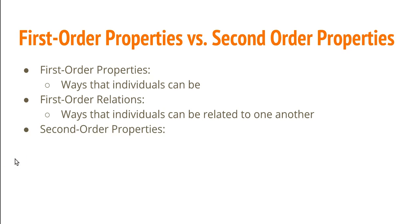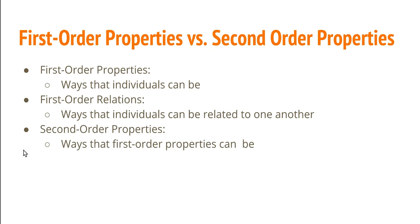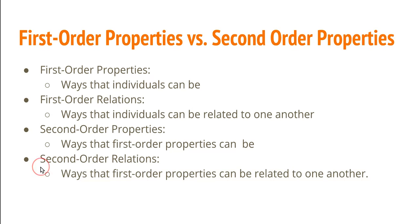A second order property is a property of a property. So second order properties are ways that first order properties can be. Second order relations are relations between first order properties and relations — they are ways that first order properties can stand to each other.